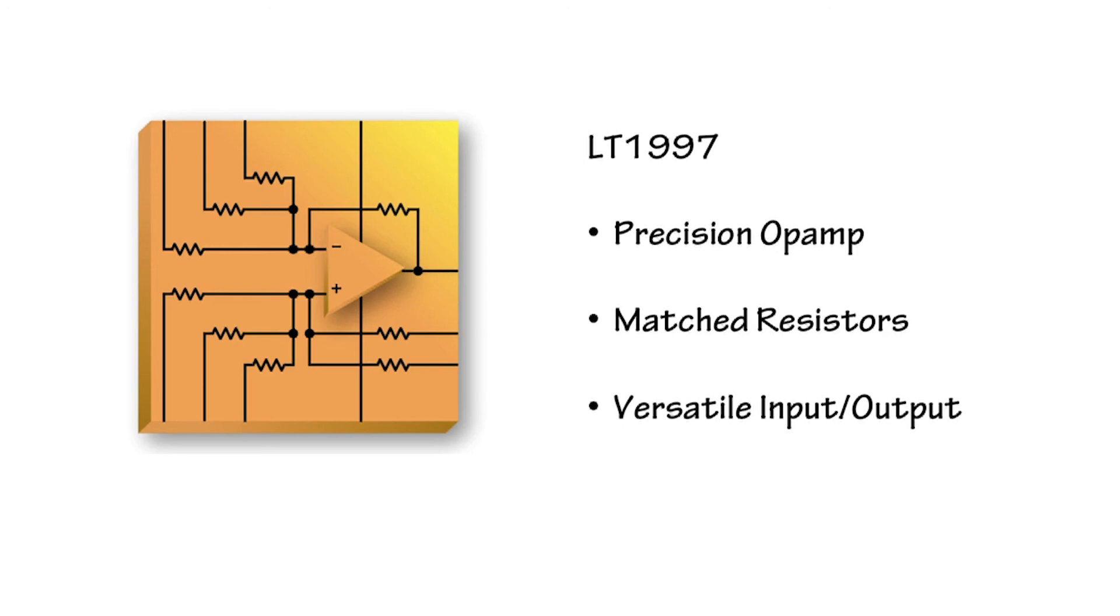The LT1997 is a family of products that starts with a precision op amp with very flexible input and output stages, and adds a wide variety of precision match resistors. This allows you to build op amp circuits with excellent gain accuracy, and to preserve the performance of a high-quality voltage reference. It also avoids offset errors due to variation of the input common mode voltage.